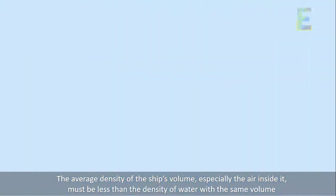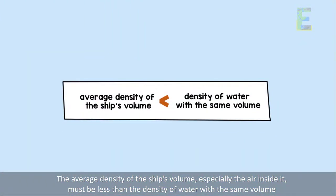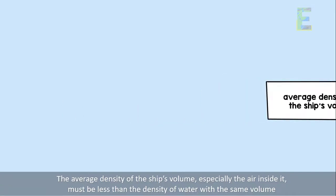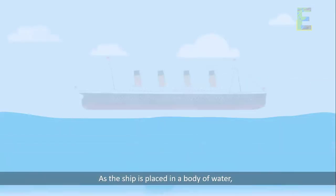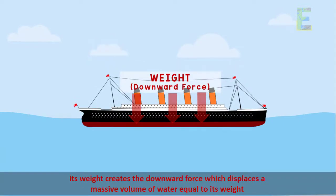The average density of the ship's volume, especially the air inside it, must be less than the density of water with the same volume. As the ship is placed in a body of water, its weight creates the downward force, which displaces massive volume of water equal to its weight.